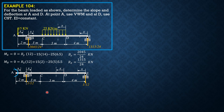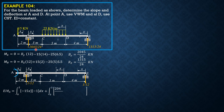We have the same sectioning. Therefore, EI·θ_A equals the integral from 0 to 2 of (−15x)(−1) dx. Due to original loads the moment is −15x; counterclockwise is positive, so the moment due to the couple is −1. Then plus the integral of (2045/24·x − 15(2+x)) times (1/12·x − 1) dx for the second section, where the moment due to virtual forces is 1/12·x − 1.